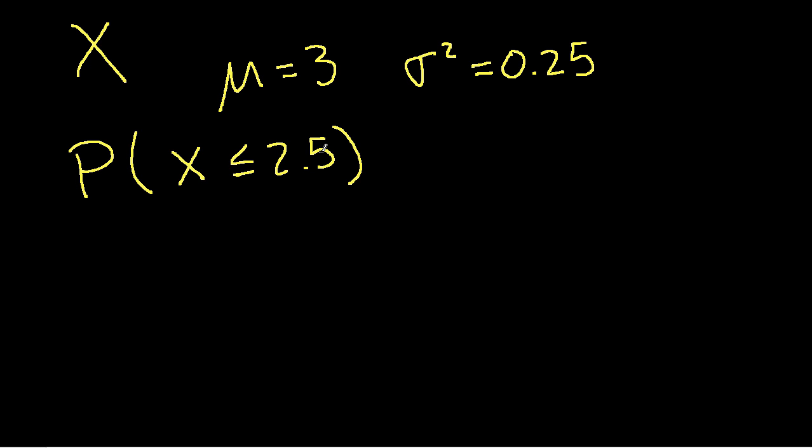The way we would find this probability is to standardize X as well as the 2.5. And then we can either look it up in a table or use a spreadsheet to compute it. So to standardize it, we subtract the mean. So we'll have X minus 3. And we divide by the standard deviation.